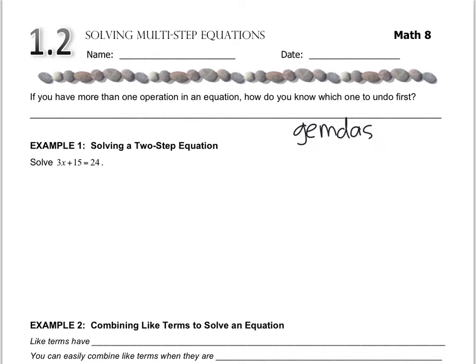Remember our friend Jem Das, which is the order of operations: grouping symbols, exponents, multiplication, division, addition, subtraction. So we're just going to go in the reverse order. So I wrote that we do the order of operations backwards.